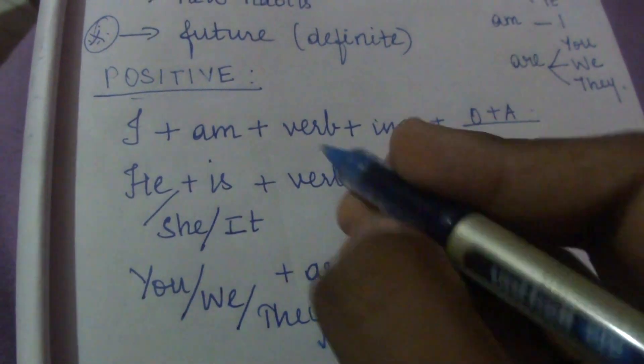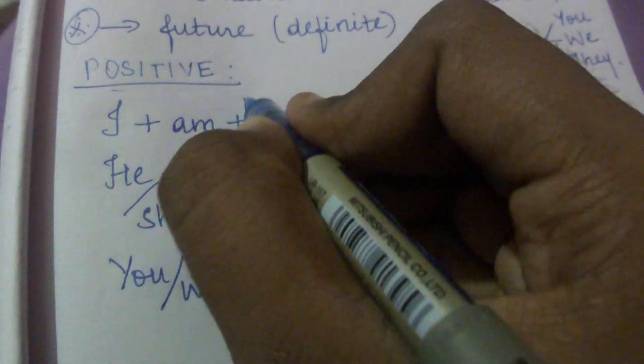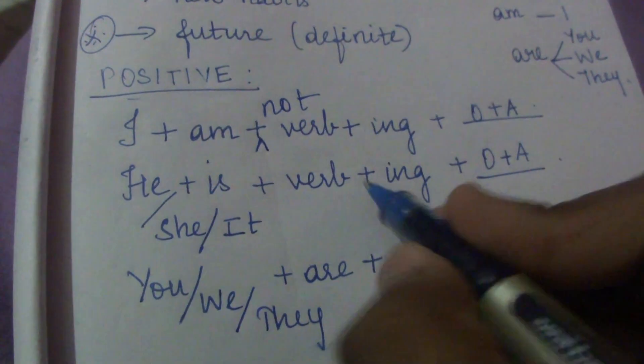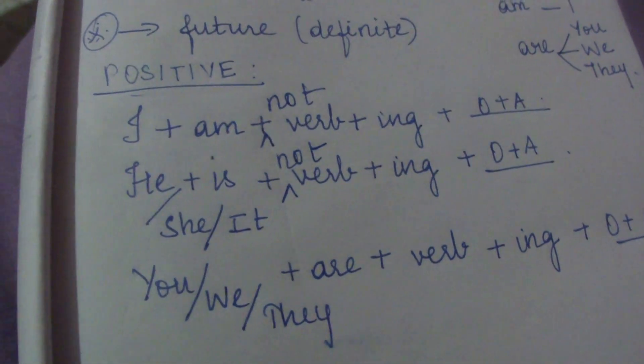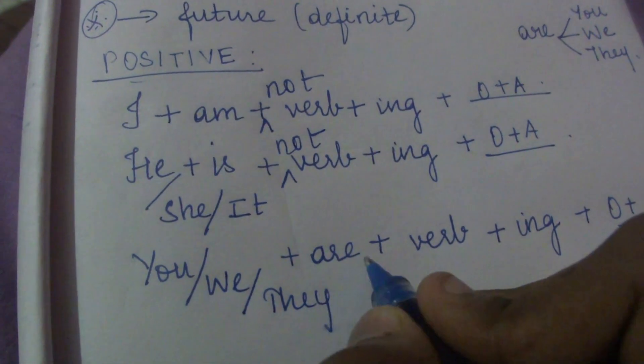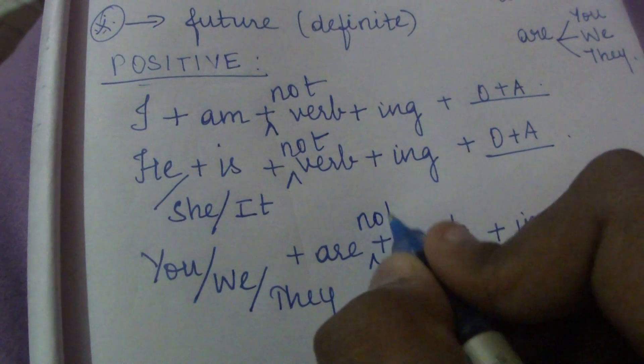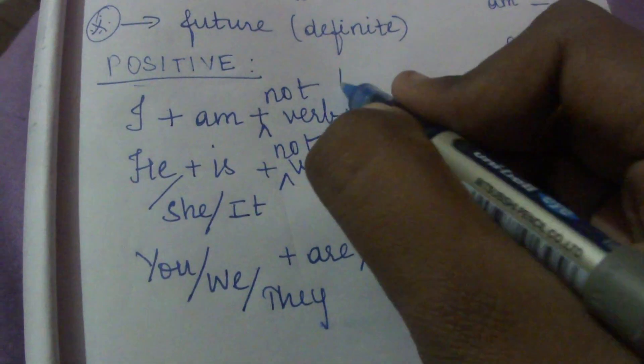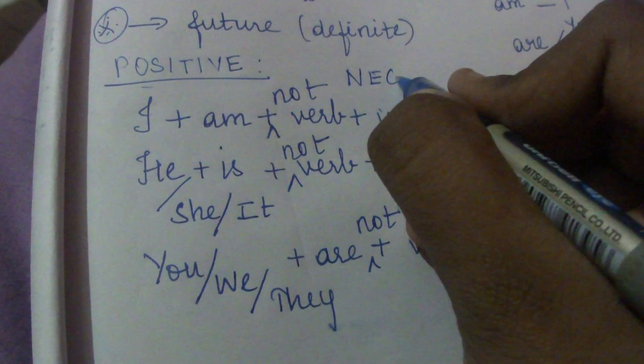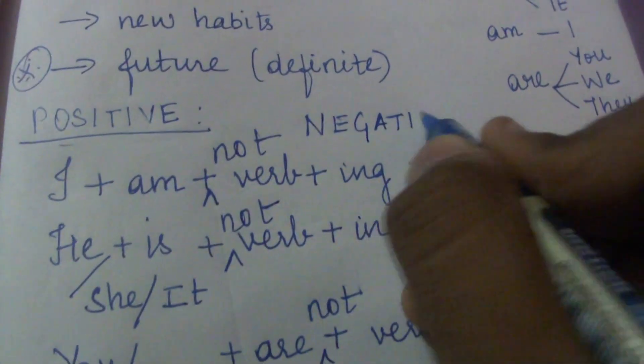And if you want to change it into negative, you can just add not here. I am not writing a letter. He is not writing a letter. She is not writing a letter. It is not writing a letter. You are not writing a letter. We are not writing a letter. They are not writing a letter. These are negative forms of present continuous tense.